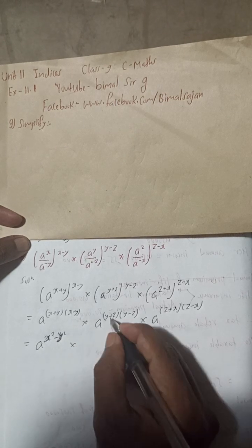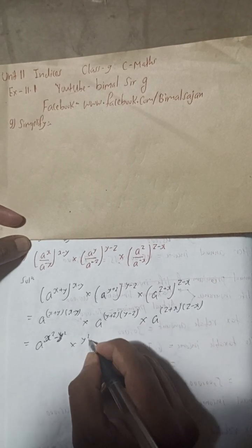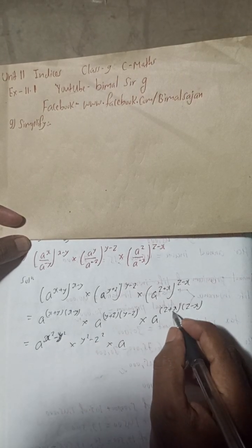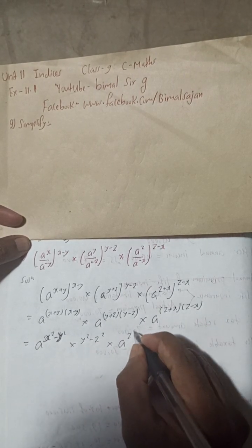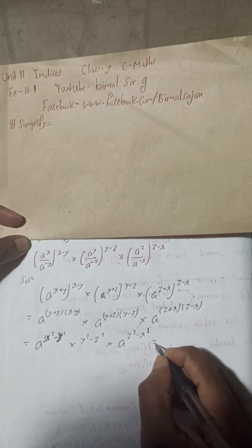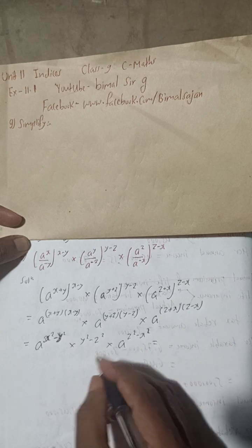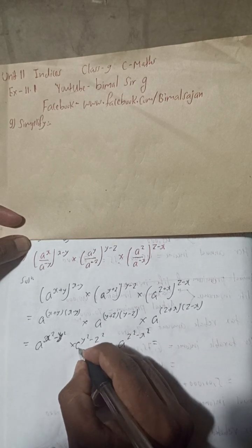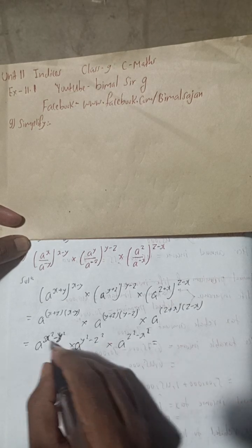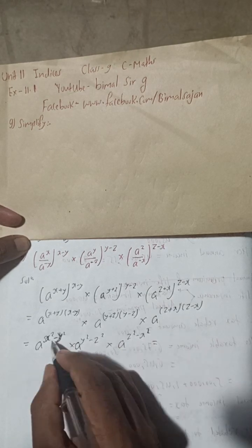Now here are the same, y plus z into y minus z will be here y squared minus z squared. Into this is a z plus x and z minus x is what, z squared minus x squared. Now everywhere there is a a in the multiple, oh sorry, this a is okay, here will be a. A to the power, everywhere there is a a.